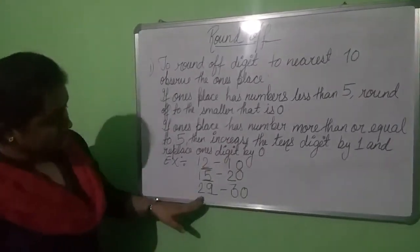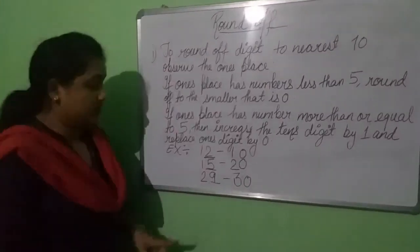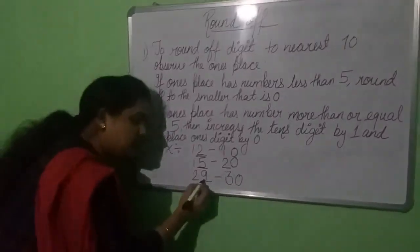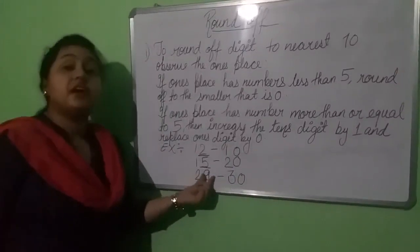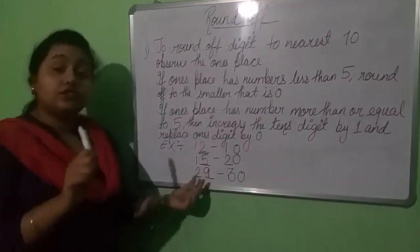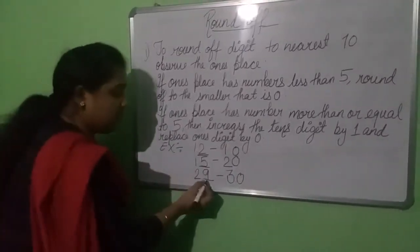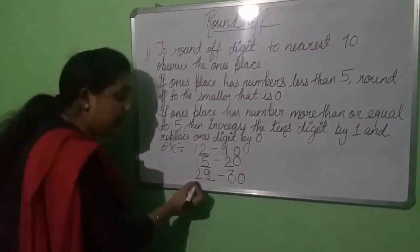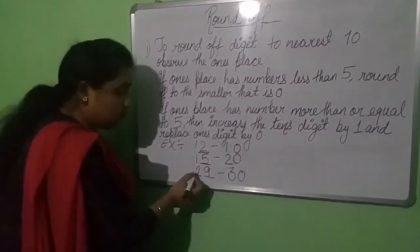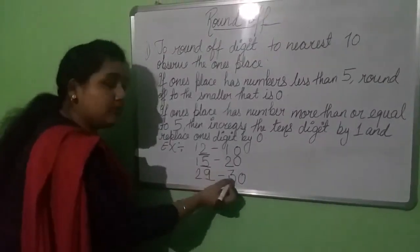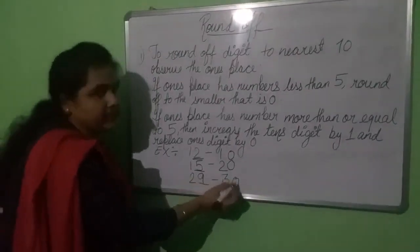In the third example, 29: at the 1's place value, we have 9, which is more than 5. That means we have to add 1 in the 10's place. So 2 plus 1 equals 3, and 0 at the 1's place. So 29 rounds up to 30.